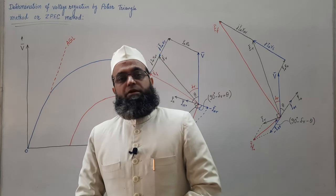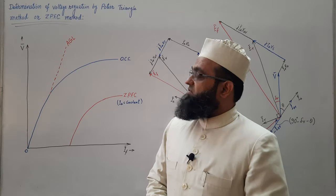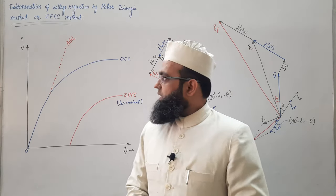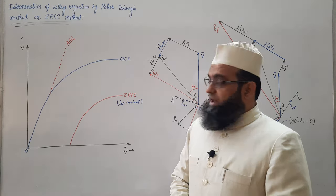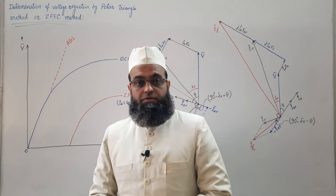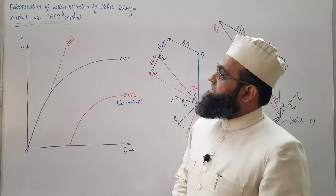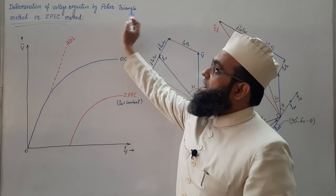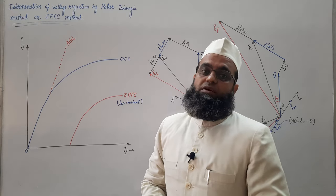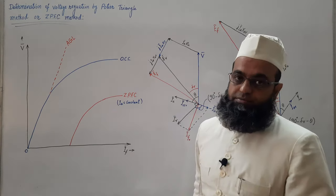Dear students, in the previous lecture we discussed the zero power factor characteristic of an alternator and the Poitier triangle. Now we are going to discuss the various steps used for obtaining voltage regulation by the Poitier triangle method, also known as the zero power factor characteristic method, or ZPFC method.